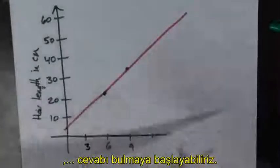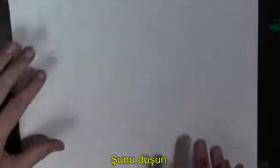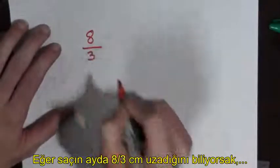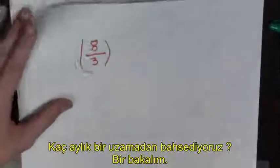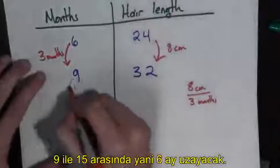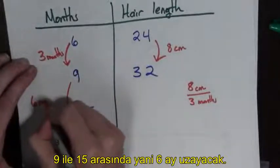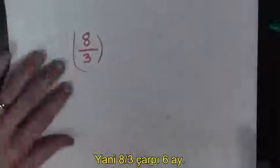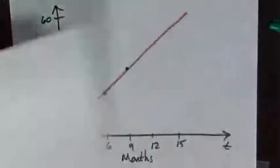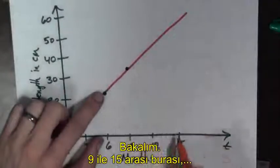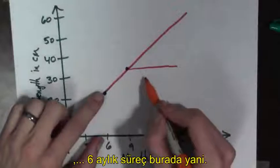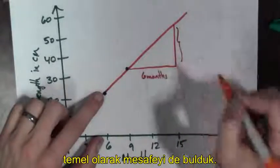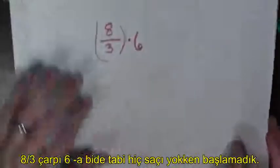At this point, we can start to write down the answer. Think about this: if we know hair is growing at a rate of eight over three centimeters per month, how many months did it grow for? Between nine and fifteen months, six months happened. So, it's eight over three times six. And we basically just figured out this distance here by doing eight over three times six.